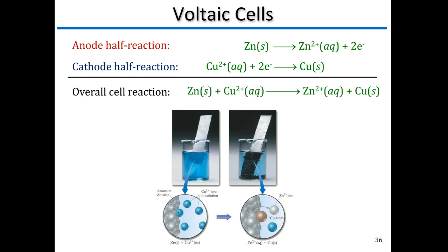We can break down the voltaic cell into anode and cathode half reactions. At the anode (oxidation): zinc metal → zinc 2+ + 2e⁻. At the cathode (reduction): Cu²⁺ + 2e⁻ → copper solid. The overall reaction is: Zn(s) + Cu²⁺(aq) → Zn²⁺(aq) + Cu(s). These two half reactions add up to give the complete reaction — we're electroplating copper and dissolving zinc into solution.